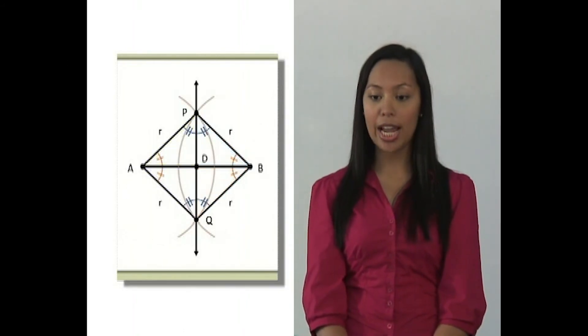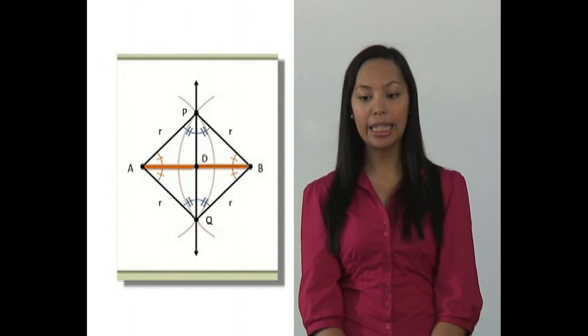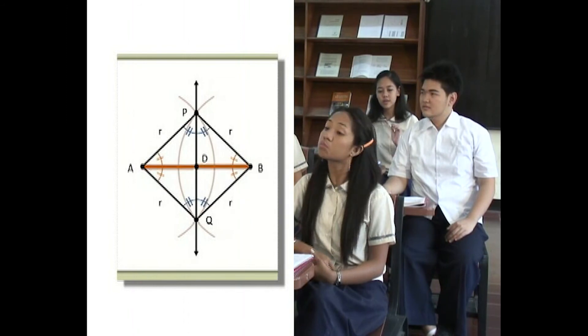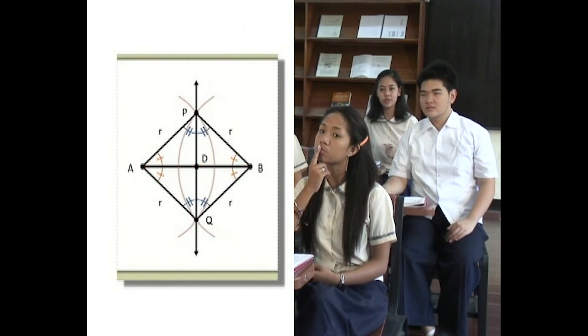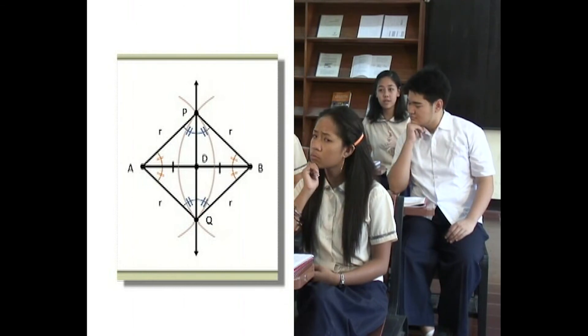Since these four triangles are congruent, what can be said about segment AD and BD? They're congruent. Oh, I see. So PQ does bisect AB. But is PQ perpendicular to AB? That's an interesting question. Can anybody answer that?